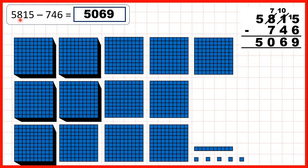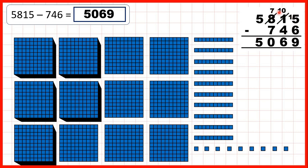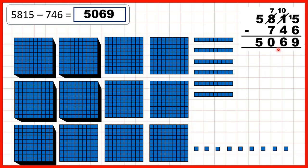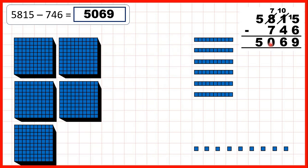Then we had 5,815 — so that's 5 thousands, 8 hundreds, 1 ten, and 5 ones. To subtract 746, first we subtract 6 ones: we take away 5, exchange, then take away our 6th one, leaving us with 9 as the ones digit of our answer. But because we exchanged, we now don't have any tens but need to take 4 tens away. So we exchange 1 of our hundreds for 10 tens, then take 4 away, to leave us with 6 as the tens digit. Now because we exchanged 1 of our hundreds, we have 7 hundreds and need to take 7 hundreds away, leaving 0 as the hundreds digit. We're not subtracting any thousands, so we have 5 as our thousands digit.